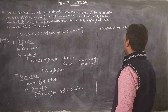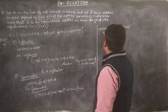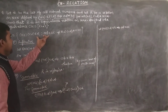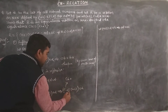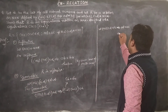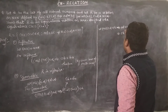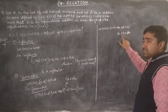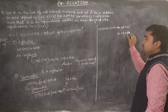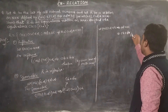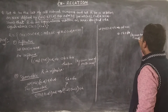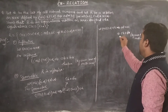By the definition of relation, (a,b) R (c,d) implies a·d equals b·c. We need to show c·b equals d·a. Since a·d equals b·c, we can write c·b equals d·a by the commutative law of multiplication on N. This is true.